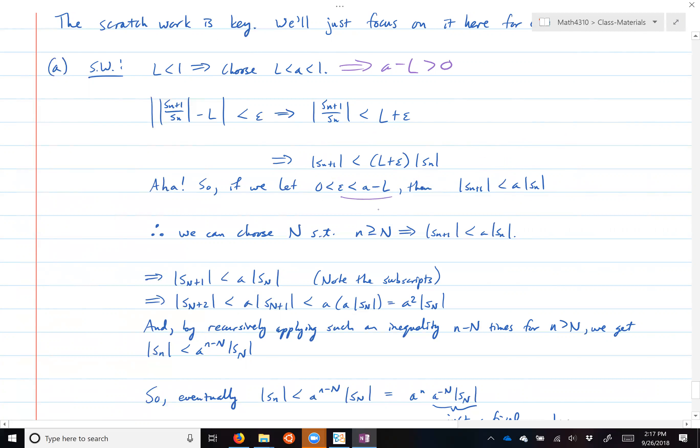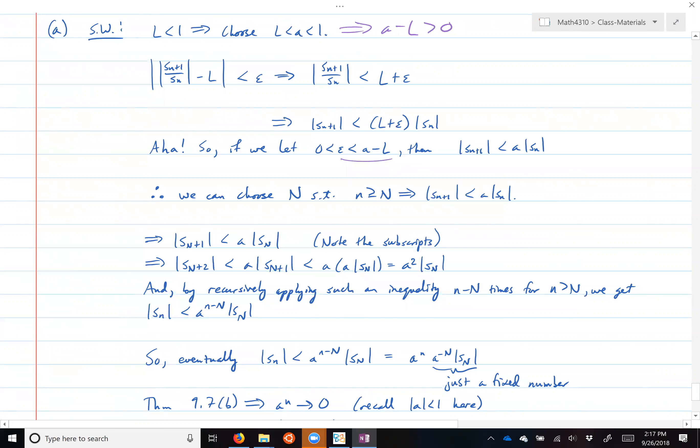So you say, what do I do with that? Well, I choose a capital N such that the little n greater than or equal to capital N satisfy that inequality. And then I just systematically go one term at a time.